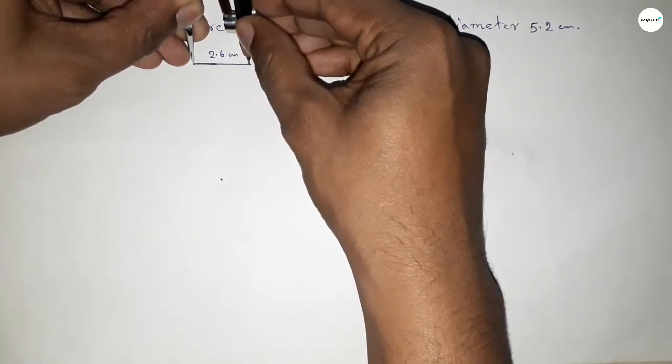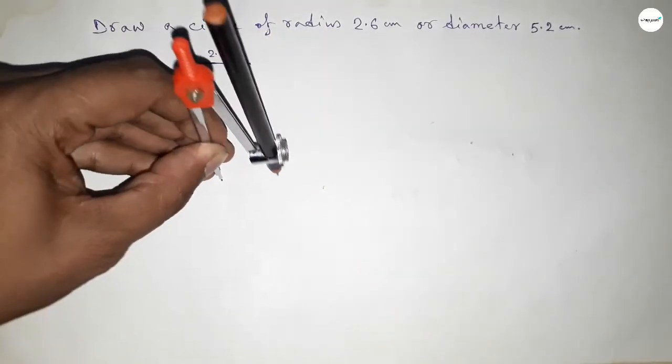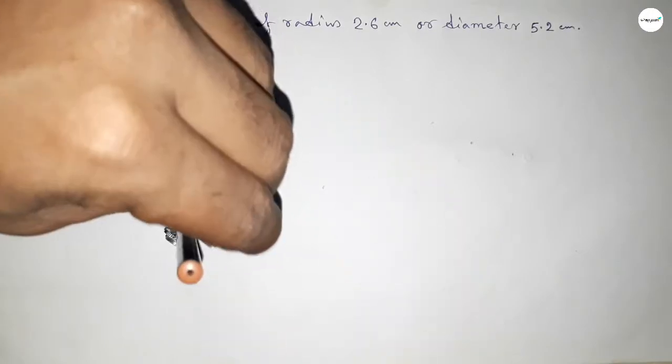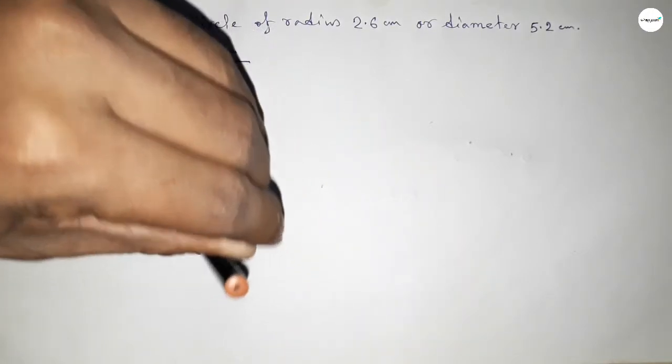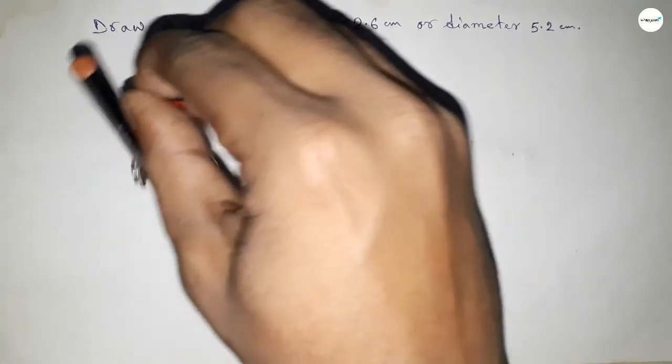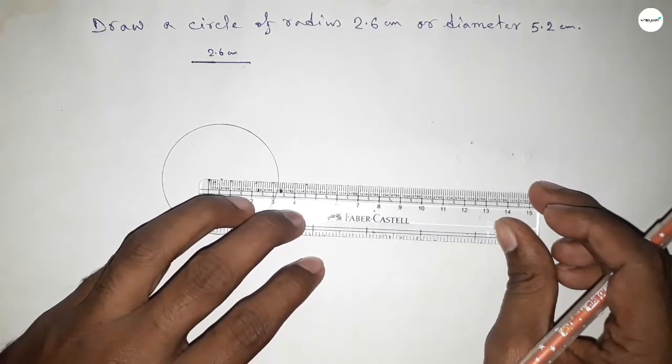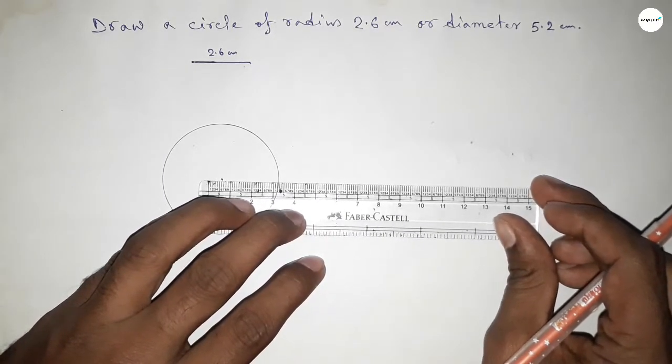By using compass, by this way, next putting the compass on the point and drawing an arc by this way, which represents a circle with radius 2.6 centimeter. So now joining this one.